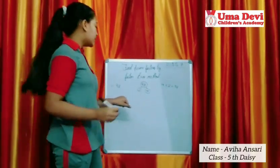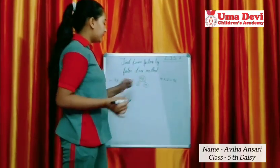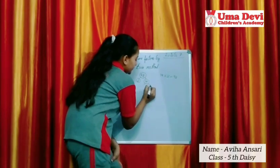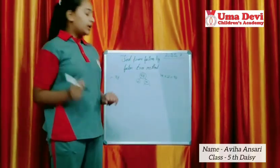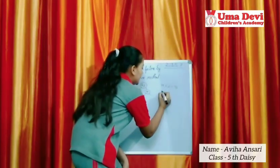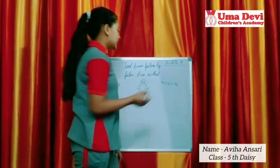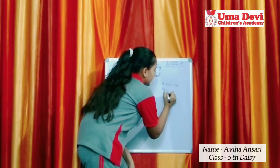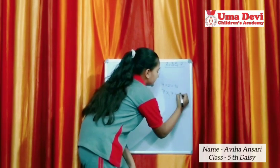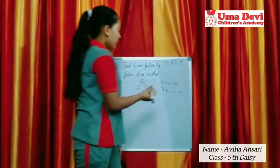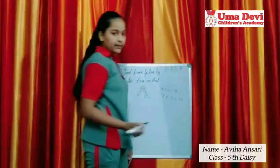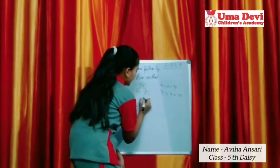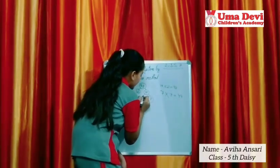2 is a prime number, so we will not make any lines under it. But 49 is a composite number, so we will make two lines under it. Now, the two numbers that multiply to get 49 are 7 and 7, since 7 times 7 equals 49. So we will write 7 here and 7 here, and make a circle around each.